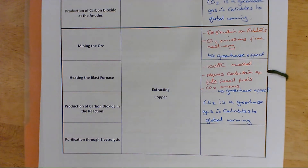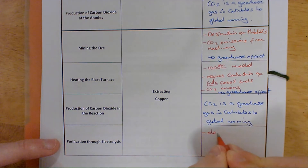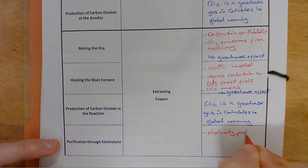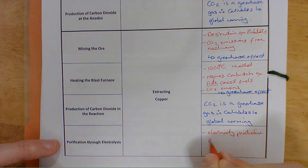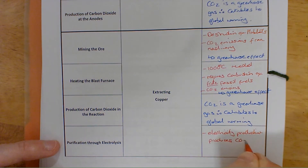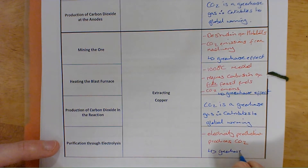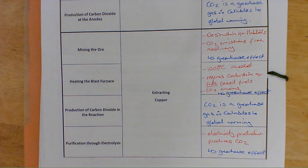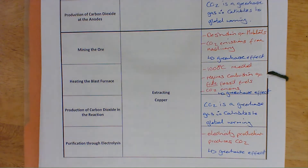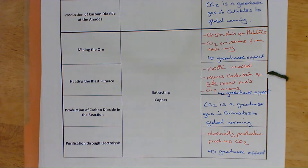And the purification through electrolysis — electricity production produces CO2, and the vast majority of electricity generation does produce CO2, which is going to increase the greenhouse effect. So it's not just the fact that these resources are finite that we need to consider; we have to consider the environmental impact just from extracting them. Not only will the aluminium and copper run out, but we're having a huge effect on the environment and the atmosphere through the extraction process.